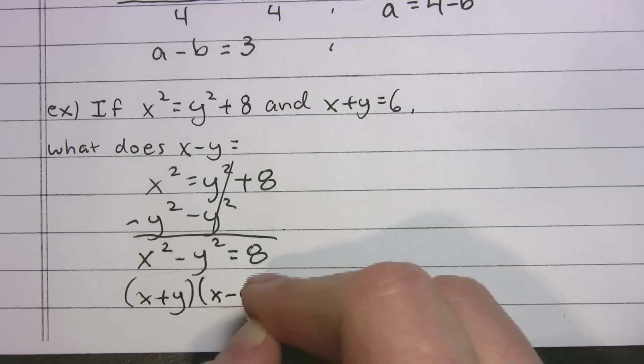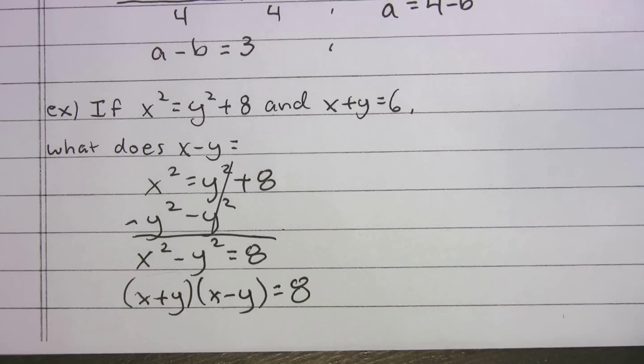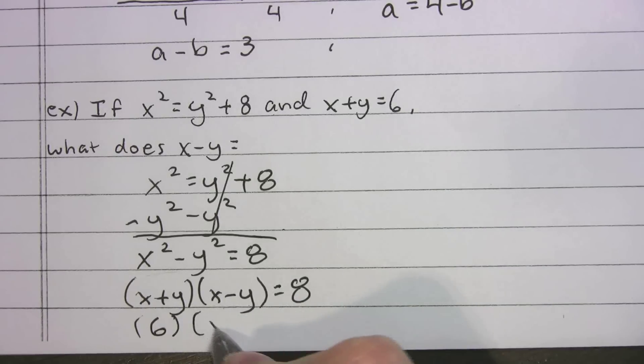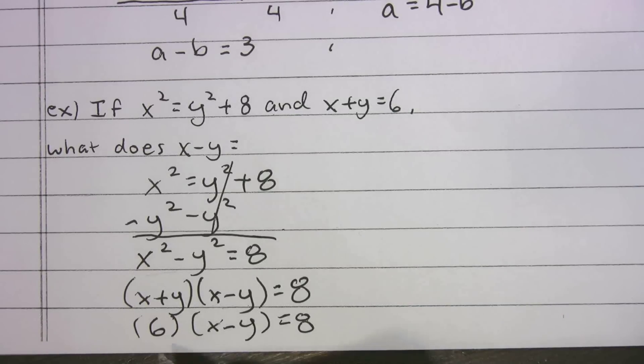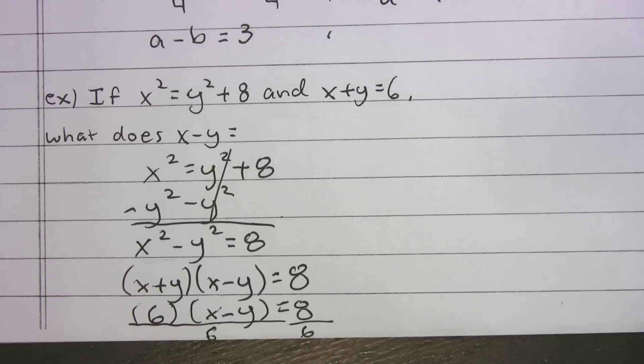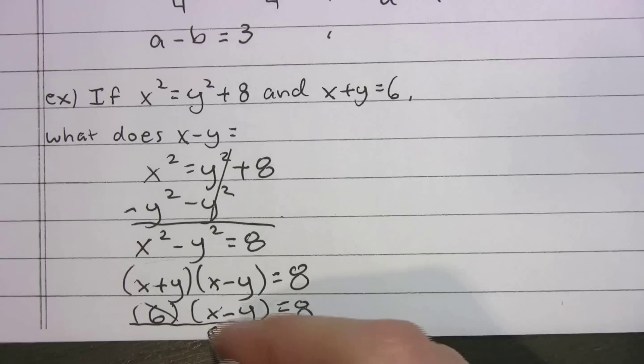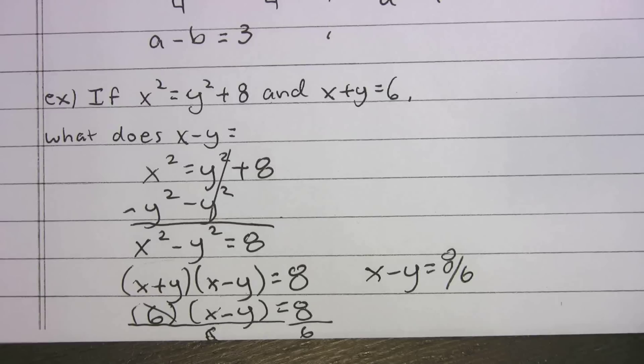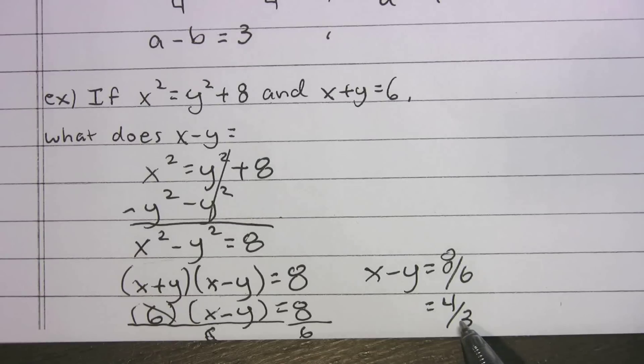x plus y times x minus y. The whole thing still equals 8. They told us that x plus y is 6. So pop that in there. Very similar to the other problem. I'm kind of running out of space here, but I'm going to divide both sides by 6. Divide both sides by 6. Those cross out. And what do we get? x minus y equals 8 sixths, or if we reduce that, we get 4 thirds. Come test day, if this was a grid in, you would just grid in 4 slash 3 and bubble in the right numbers.